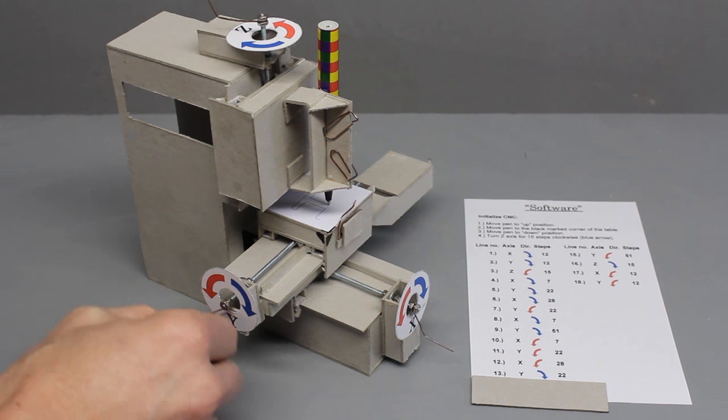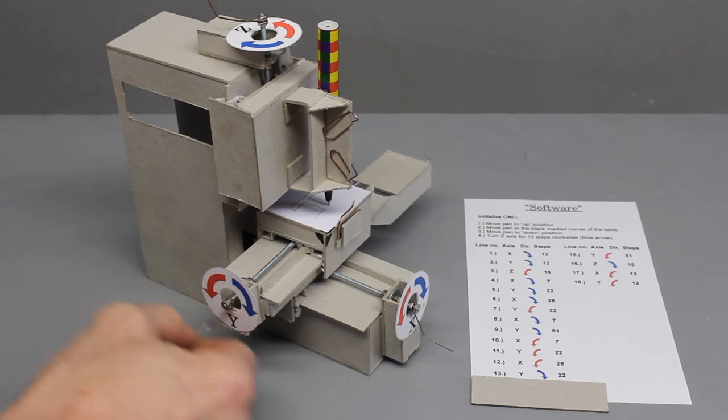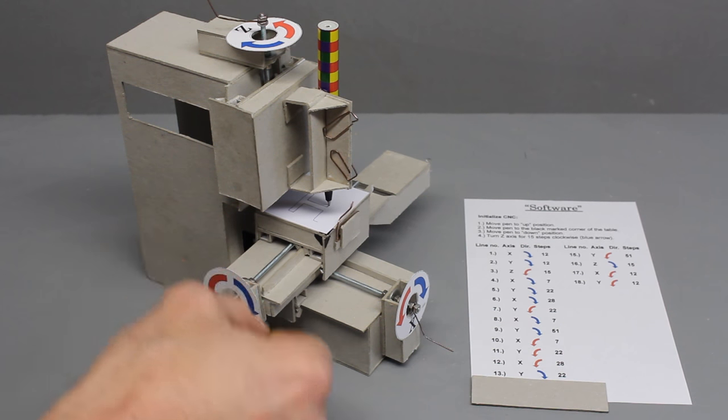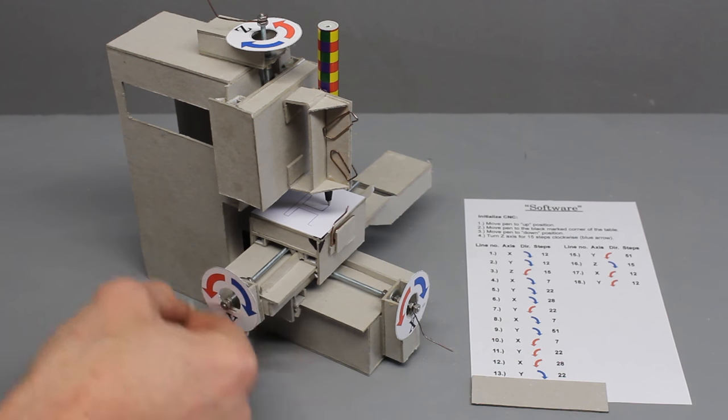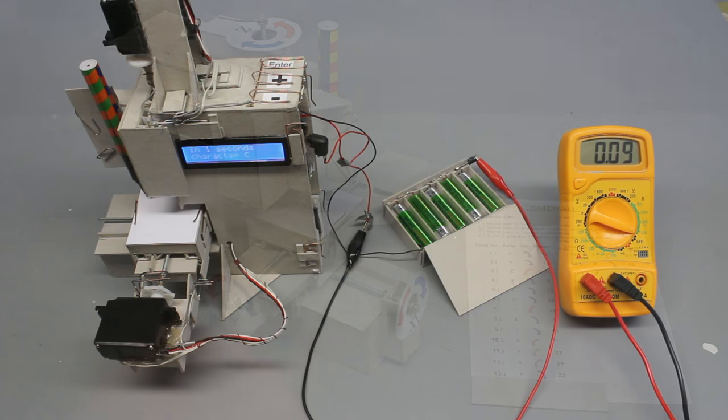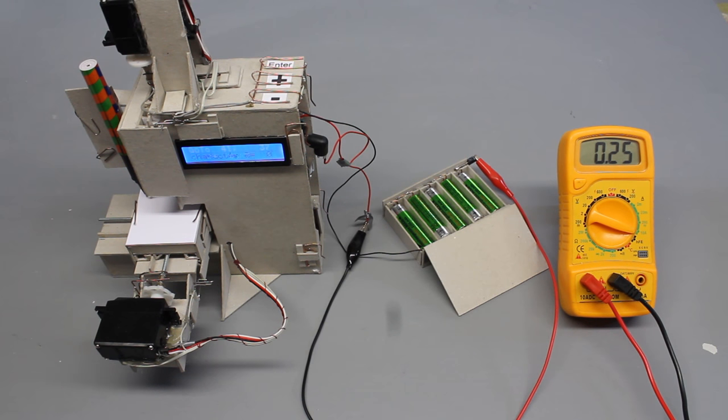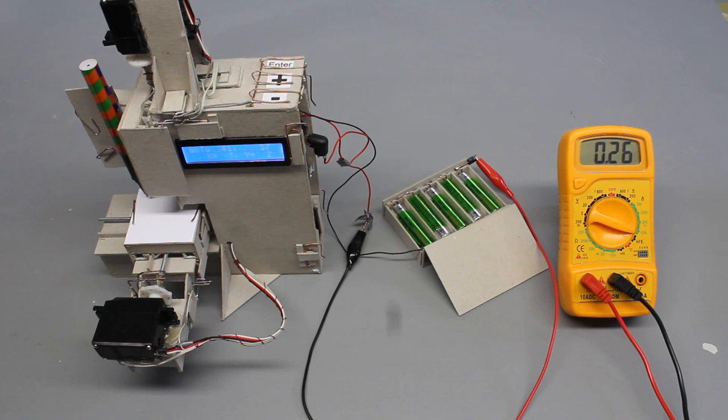The aim of this project is to explain in detail how CNC machines work, which is why it all started with a manually operated CNC from cardboard and paper clips that can also run autonomously with an Arduino, three servos and a battery pack. It was made with schools in mind.